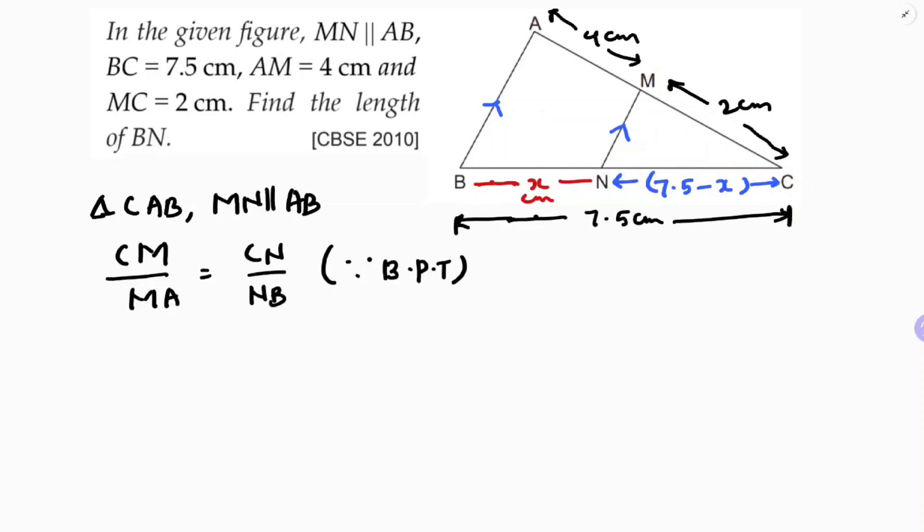Substituting the values: CM is 2, MA is 4, so 2 by 4 equals 7.5 minus x by x. Simplifying, we get 1 by 2 equals 7.5 minus x by x. Cross multiplying: x equals 2 times 7.5 minus x.